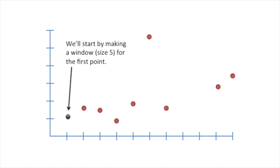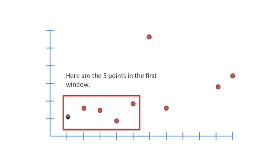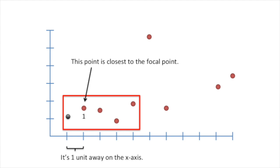We'll start by making a window, size 5, for the first point. We'll call this point the focal point of the window. Here are the five points in the first window. This point is closest to the focal point. It's one unit away on the x-axis.